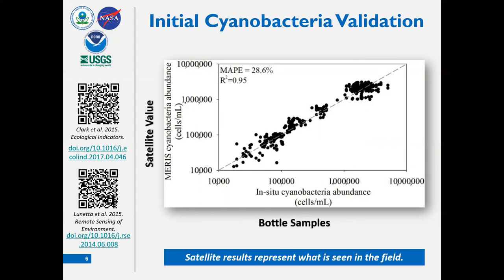Does wave height and frequency affect the data? It can cause glint artifacts — similar to when you're flying over a body of water and get a reflection of light back in your eye. That's one of the quality flags we're working on. The way you know you have that issue is that instead of a smooth, coherent bloom with visible swirls of color, it looks very pixelated — an artifact of glint, probably from wave action and sun angle relative to the instrument's viewing angle.